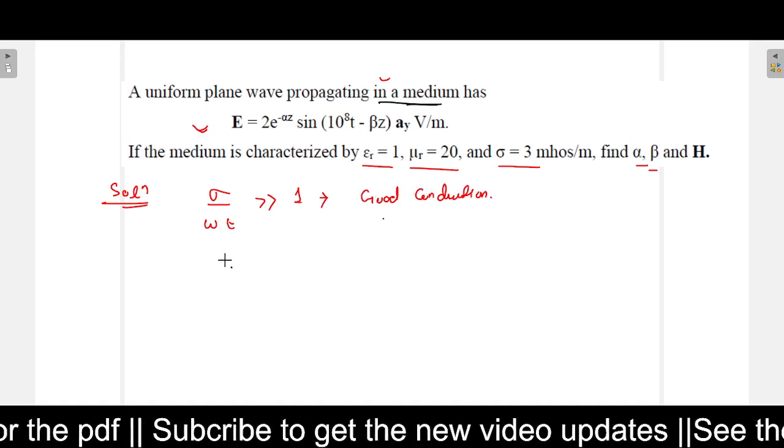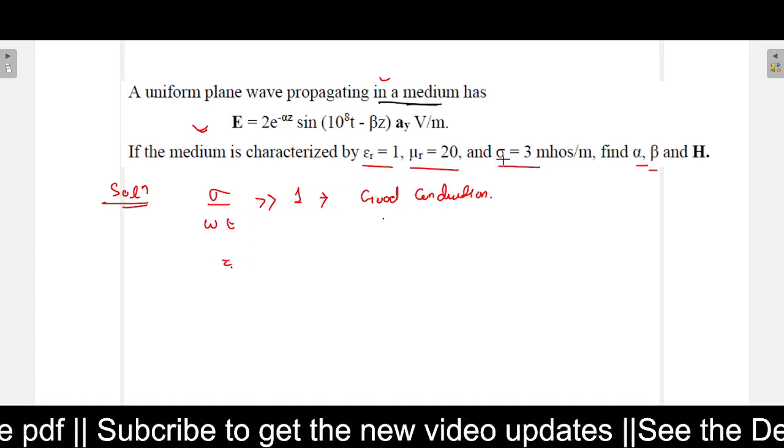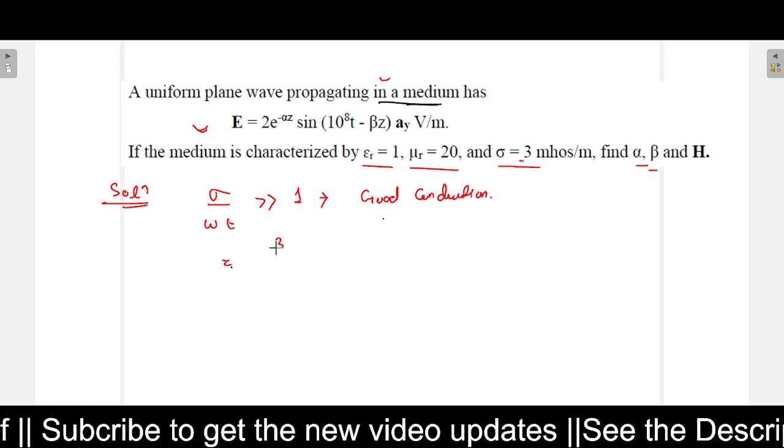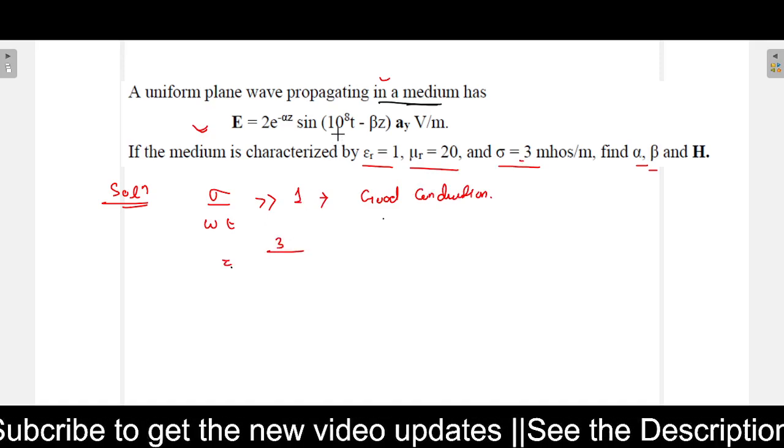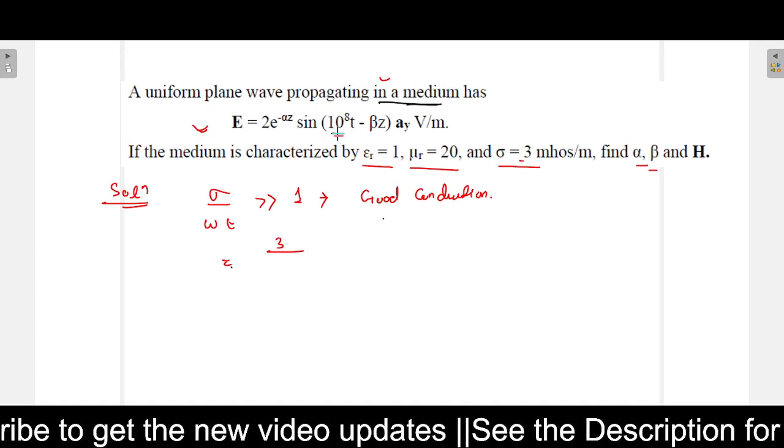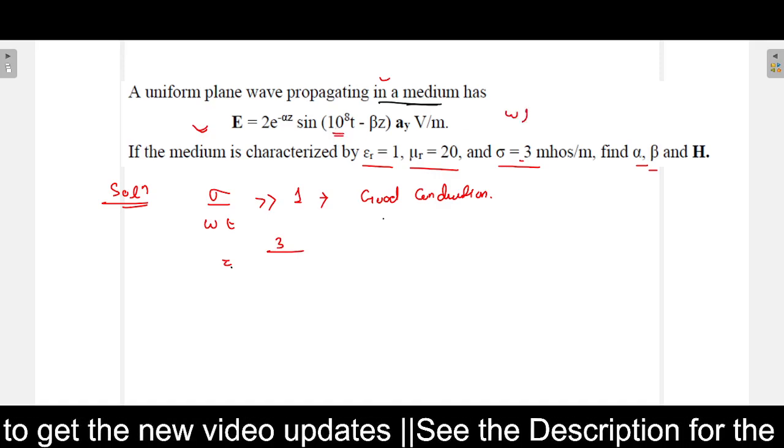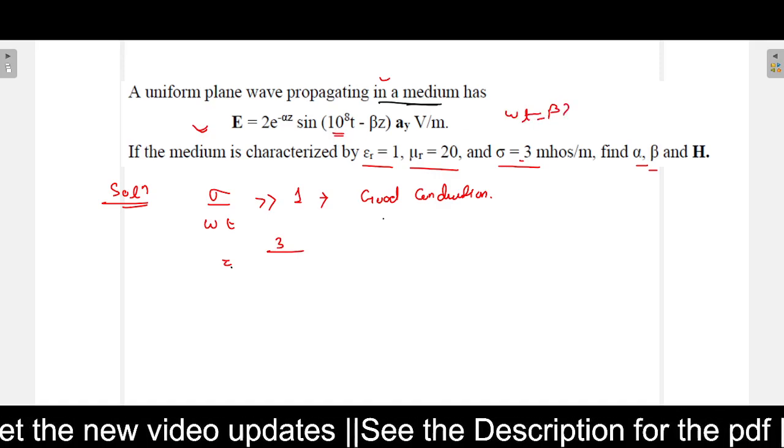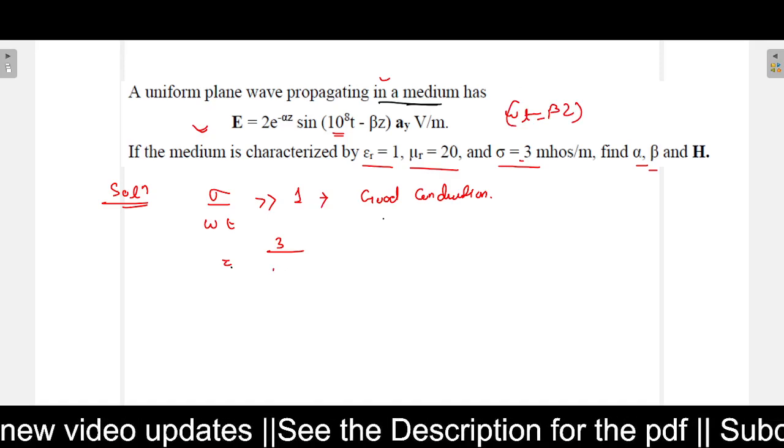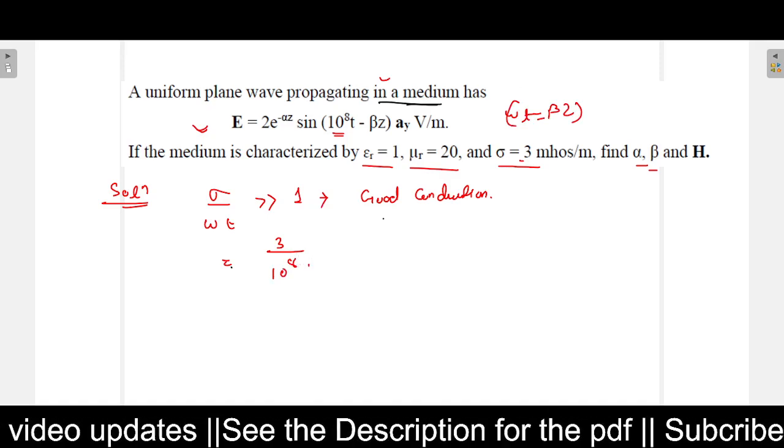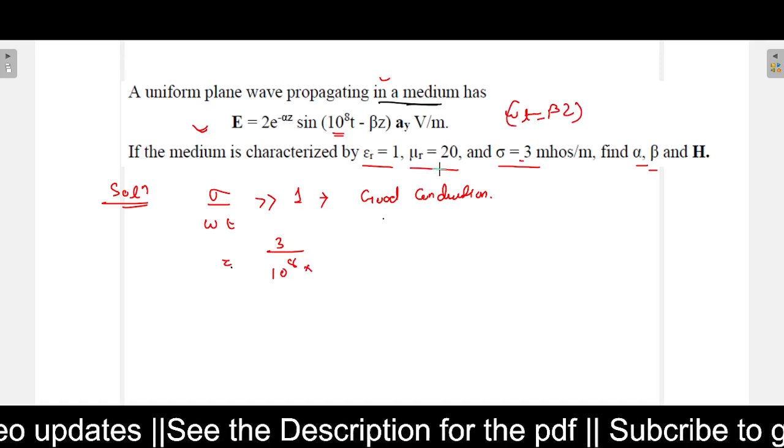So now what is this value? Sigma is given as 3, divided by omega. You can see omega is given here 10^8. So if I compare this standard omega*t minus beta*z, then omega value is 10^8. So it is divided by 10^8 into epsilon value.